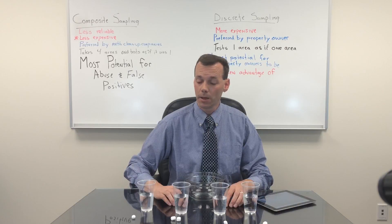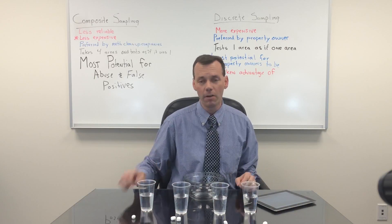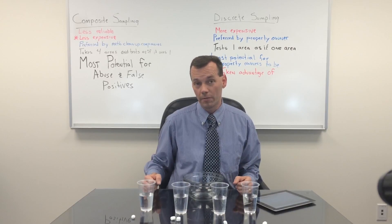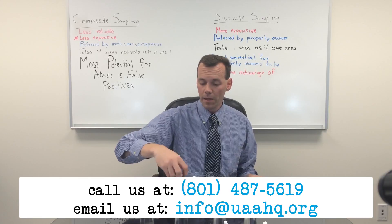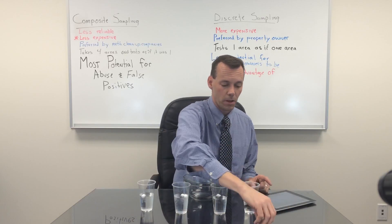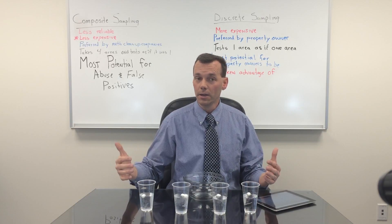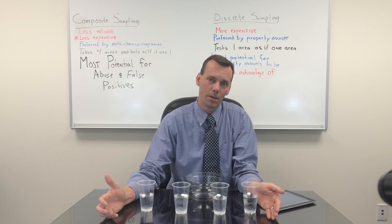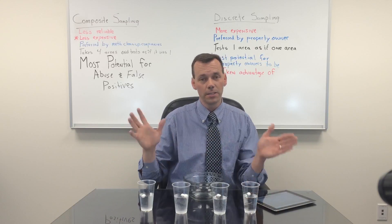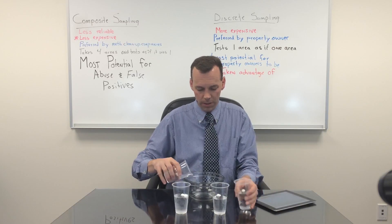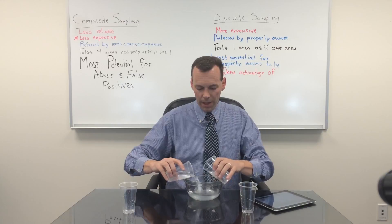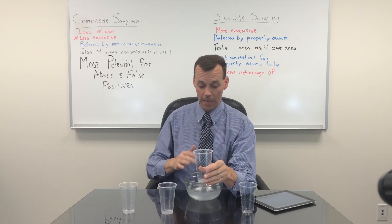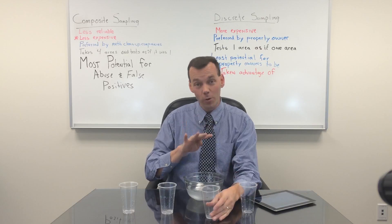Let me explain what composite sampling is. If the health department says that in each cup I could have up to four marshmallows before it's considered contaminated — but if I have five in a cup, I would have to clean it up — and we put one marshmallow in that cup, two in that cup, one in that cup, and one in that cup, you can see we are not exceeding the contamination levels dangerous to the public in any way, and so we shouldn't be required to clean up. But what composite sampling does is, because it's expensive to do four different tests, they say let's save money and do one test. Let's pour all of these samples into one and test that. But let's assume all the marshmallows came from one cup. So instead of multiplying by four the standard and allowing 16 marshmallows, we're still only going to allow four marshmallows.